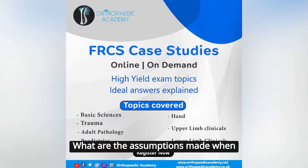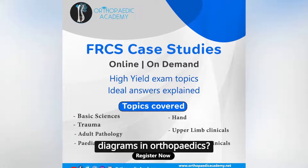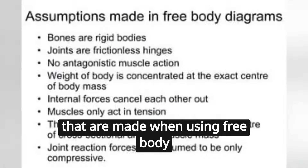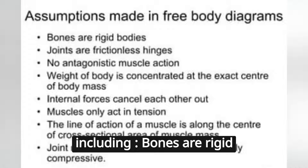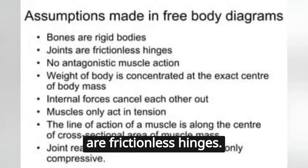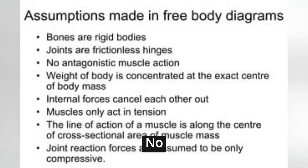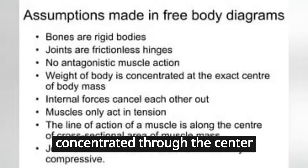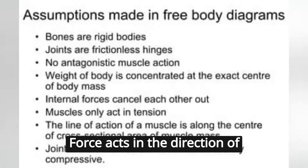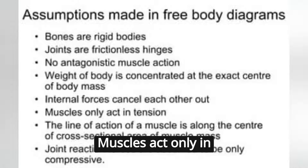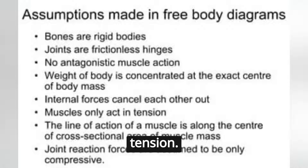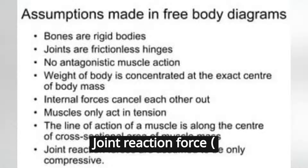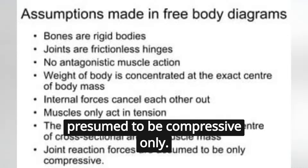What are the assumptions made when using free body diagrams in orthopaedics? There are several assumptions, including: bones are rigid rods; joints are frictionless hinges; no antagonistic muscle action; weight of the body is concentrated through the center of mass; force acts in the direction of the muscle belly; muscles act only in tension; internal forces cancel each other out; and joint reaction force (JRF) is presumed to be compressive only.